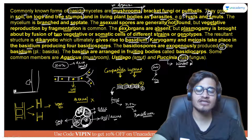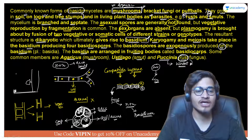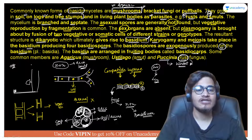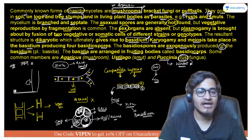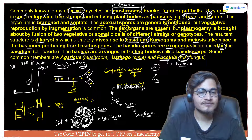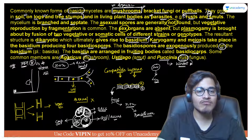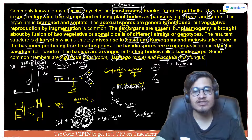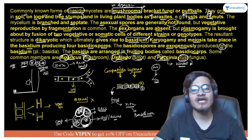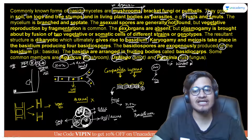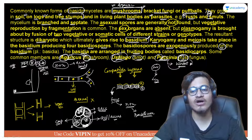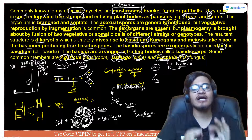Agaricus is the most common Basidiomycetes member. To remember the examples, there is a mnemonic: 'Aaj main us se pareshan raha.' 'Aaj' stands for Agaricus, the mushroom. 'Main' reinforces Agaricus = mushroom. 'Us' stands for Ustilago = smut. 'Pareshan' — taking 'P' and 'shan' by pronunciation gives Puccinia. And 'raha' means rust. So: Agaricus = mushroom, Ustilago = smut, Puccinia = rust.